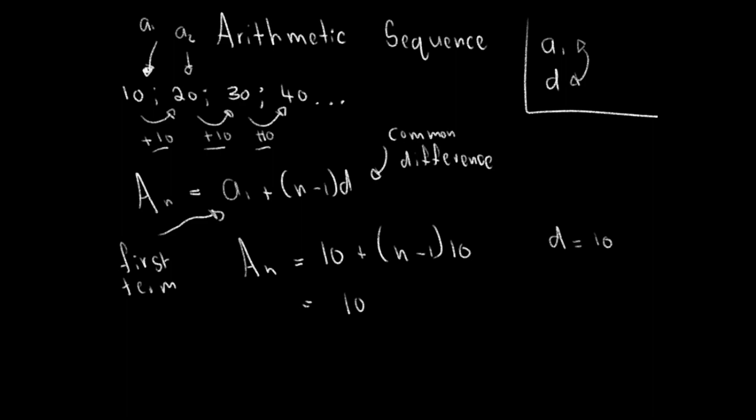So I can say 10. I'm going to distribute this 10 into the parentheses by 10 multiply n and 10 multiplying negative 1. So that's going to give me 10n minus 10. These two simply cancel each other out: 10 minus 10 is zero, therefore a_n = 10n.